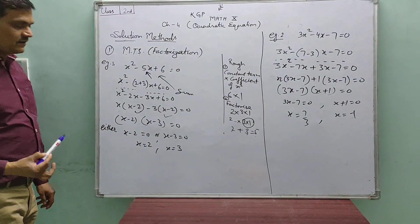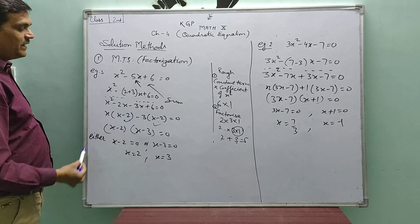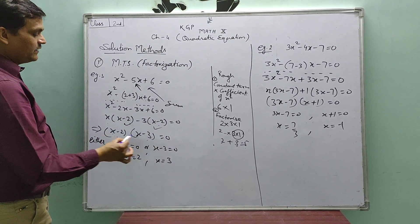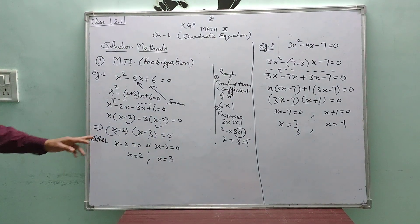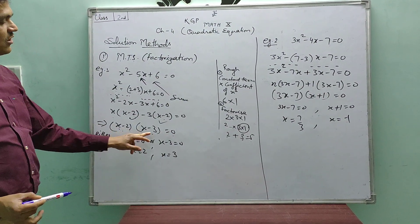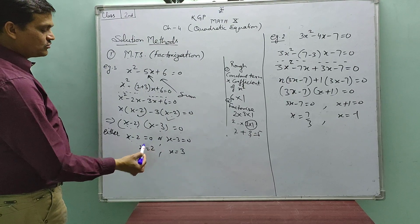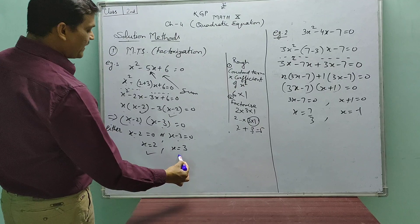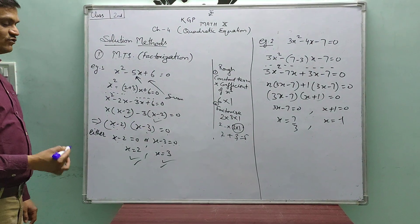These two brackets must be the same — otherwise we are making a mistake. Now, these two brackets are the same, so x minus 2 can be taken as common. The remaining part is x minus 3. So: (x minus 2)(x minus 3) equals to 0. The product of the two brackets equals zero, meaning either bracket is zero. Therefore x minus 2 equals 0 gives x equals 2, or x minus 3 equals 0 gives x equals 3. These are the two solutions of this equation.